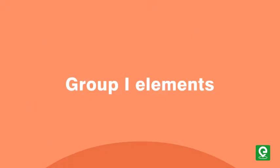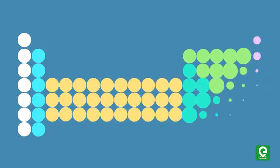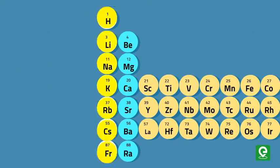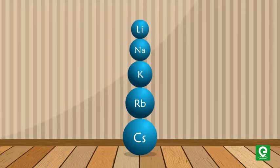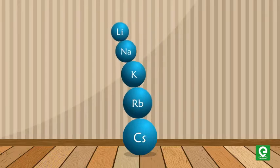Group 1 elements are located in the s-block which is adjacent to the d-block in the periodic table. The smallest one among these elements is lithium and the largest one is cesium, and the size of elements increases as we go down the group.